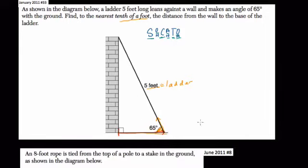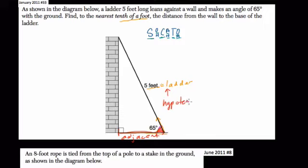We want to look at what we have and what we need to find in order to figure out which ratio to use. We're looking at this 65-degree angle and we want to find this distance. This distance is the adjacent side — adjacent means the side forming the angle that's not the hypotenuse. The ladder is the hypotenuse. So we have the angle, we want the adjacent side, and we have the hypotenuse — that means we use cosine, because cosine is adjacent over hypotenuse.